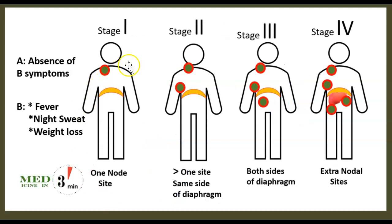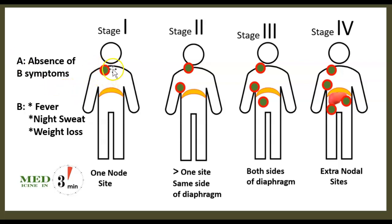Now we're going to talk about the stages: Stage 1, 2, 3, and 4. Stage 1 is a one-node site — the adenopathy is limited to one nodule around the neck area. Stage 2 involves more than one site, but both on the same side of the diaphragm — both above the diaphragm. Stage 3 involves both sides of the diaphragm, above and below. Stage 4, called extra-nodal sites, means spread not only above and below the diaphragm but also laterally.